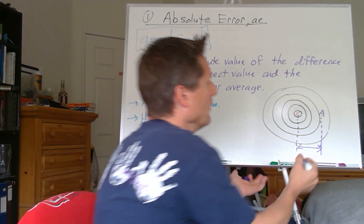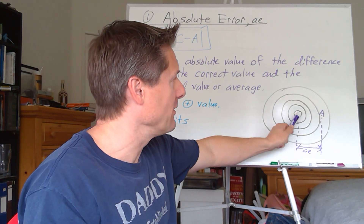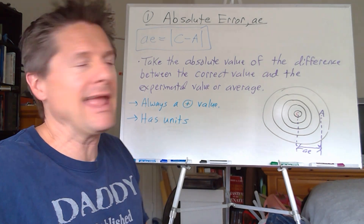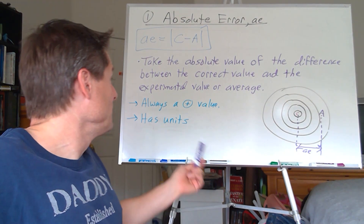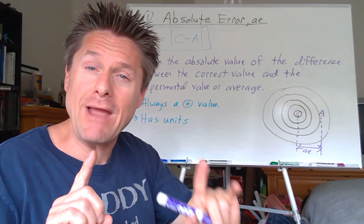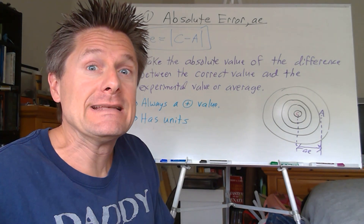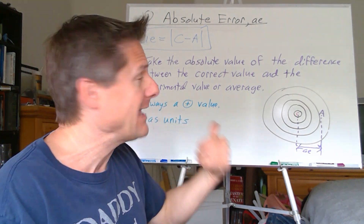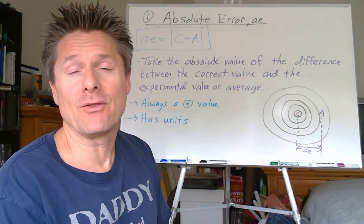We can literally measure the distance between the true value and where you landed — pretty simple. Absolute error will have units, so make sure when subtracting they're both in the same units. When subtracting, you're limited by the largest absolute uncertainty — the fewest number of decimal places. Very rarely will I grade you on absolute error in laboratory.